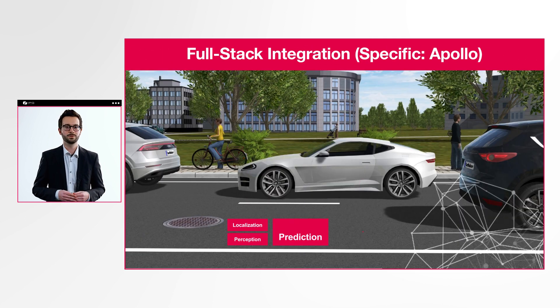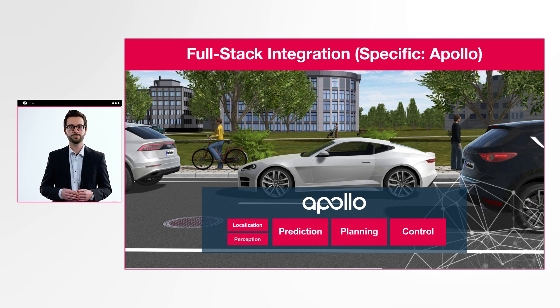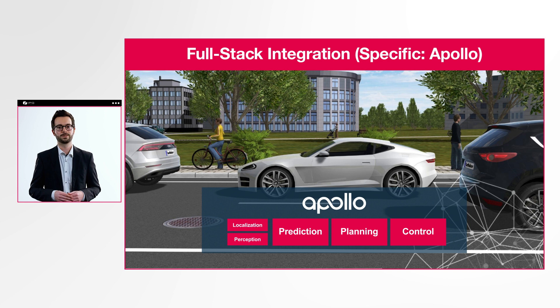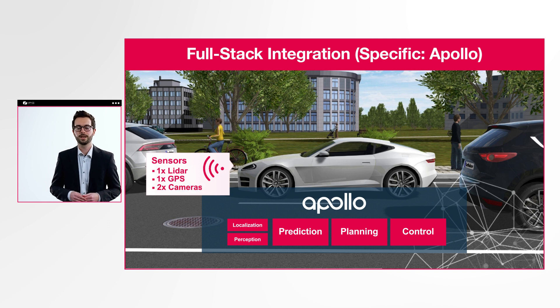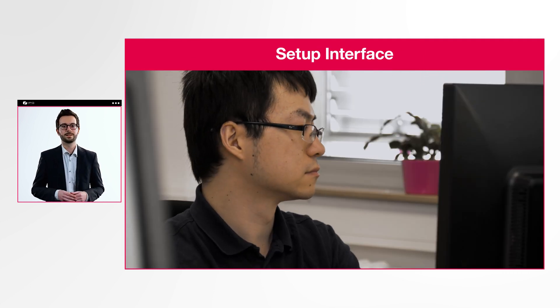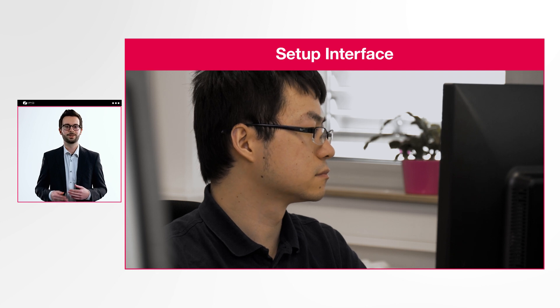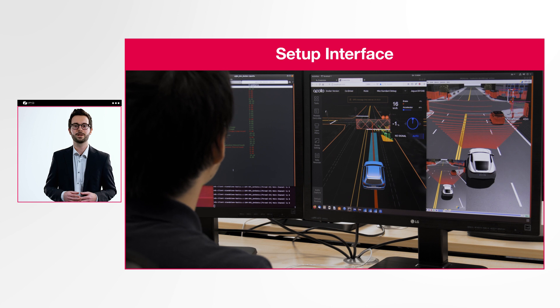For this example, we have used the Apollo self-driving stack from Baidu, which offers the basic functionality to move a vehicle through an urban environment. It uses LiDAR for object detection, GPS and HD maps for localization, and two cameras for traffic light recognition. We worked on setting up the interfaces from the sensors to the perception and localization modules and connected the output of the motion controller to our high-fidelity vehicle dynamics model.